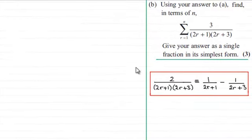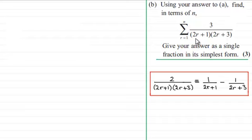For this part of the question, part B, it says using your answer to A, which is what I've written back down here, find in terms of n this summation: r going from 1 to n of 3, all divided by 2r plus 1 times 2r plus 3. Give your answer as a single fraction in its simplest form for three marks. So if you'd like to have a go at this, pause the video. Welcome back — I'm going to take you slowly through now.